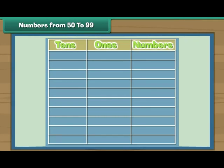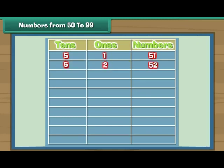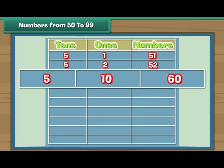Numbers from 50 to 99. Let us now complete one more table. Five tens and one give 51. Five tens and two give 52. Five tens and ten is 60.